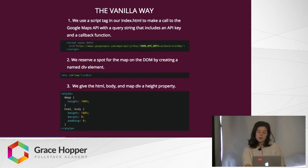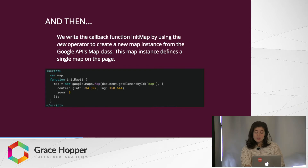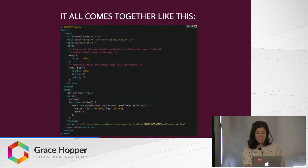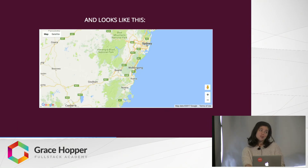In order to get the map to render on the page, it is necessary to give it a height property. Then we write the init map function that we put as our callback function in the previous script tag. This function creates a new map instance from the map constructor function given to us by the Google Maps API. This class requires two parameters: the div element that the map will belong to, and an object with center and zoom properties. And it all comes together like this — creating a map with its center somewhere in Australia.